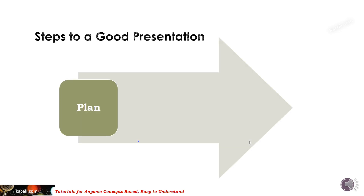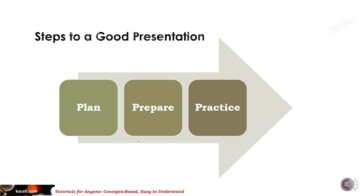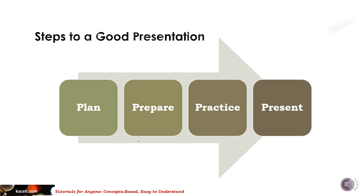Four steps for a good presentation. First, you need to plan ahead on what the outline will be and what the content of the presentation will be. Then you need to prepare — sit down, find the facts and content you're going to present, and get to know the audience. Once you have prepared your presentation, you need to practice it, and a good practice makes for a good presentation. Then you actually need to present it to the audience.